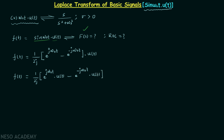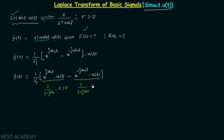Now we focus on calculating the Laplace transforms of the two exponential signals. I will not repeat the full derivation since we covered all necessary steps in the previous lecture while calculating the Laplace transform of cos(ω₀t)·u(t). The Laplace transform of the first exponential is 1 over (s minus jω₀) with ROC σ greater than zero, and for the second exponential it is 1 over (s plus jω₀) with the same ROC σ greater than zero.